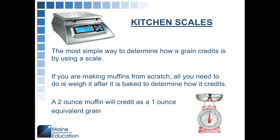The most simple way to determine how a grain credits is by using a scale. If you have the Exhibit A Grains Chart and you know what group your grain falls into, you can determine how it credits by just putting the item on a scale. For example, if you're making muffins from scratch, all you need to do is weigh the item after it is baked. A muffin that weighs two ounces will credit for a one ounce equivalent grain.